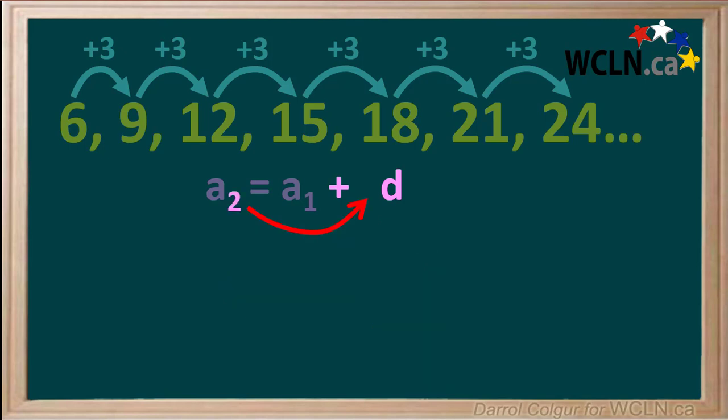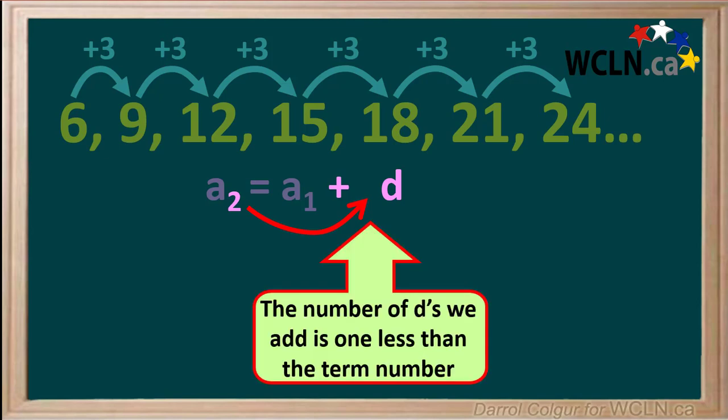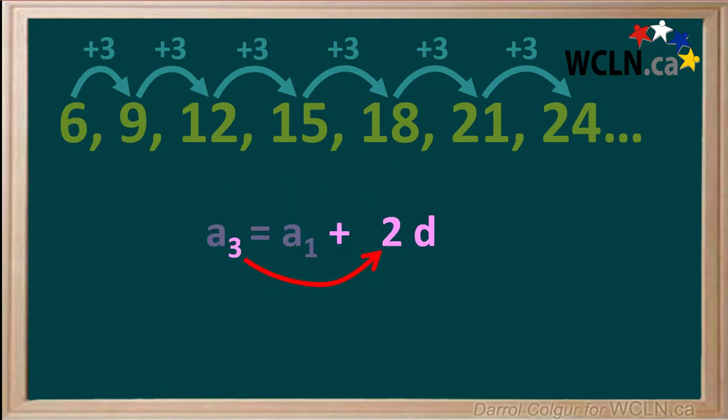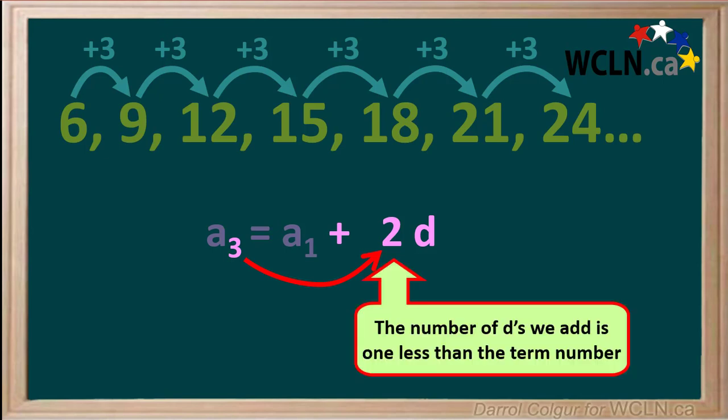Notice in term number 2, we add 1d. So the number of d's we add is 1 less than the term number. In the second equation, the term number is 3 and we add 2d's. So again, the number of d's we add is 1 less than the term number.